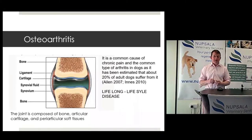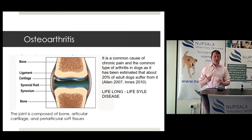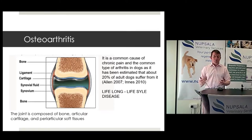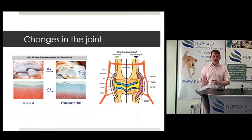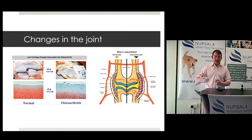Nearly 20% of adult dogs suffer from osteoarthritis, and an even bigger proportion once they get older — making this a lifelong lifestyle disease. When it comes to the equine joint, most performance horses would have some degree of osteoarthritis, which is why we look at treatment in the context of acute synovitis and how the joint adapts as it moves from a normal to an osteoarthritic state.